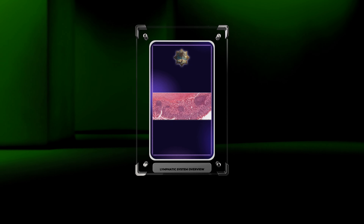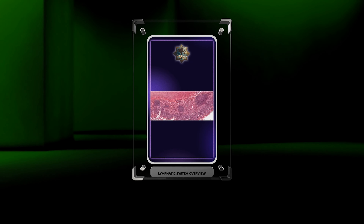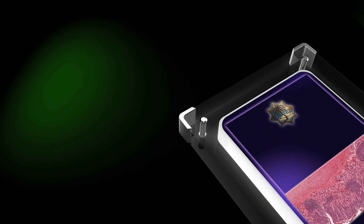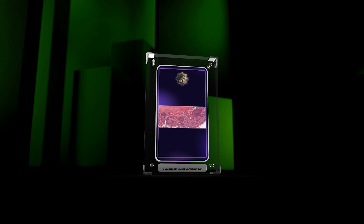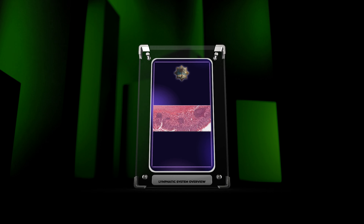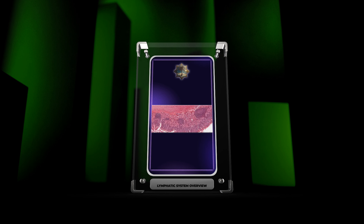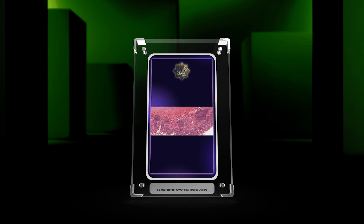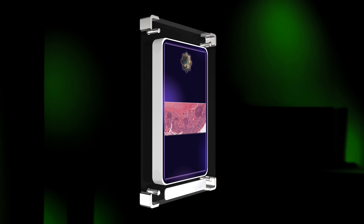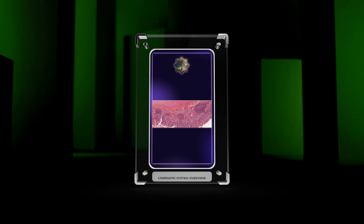The lymphatic system is an essential component of the human body's immune system. It plays a crucial role in maintaining tissue homeostasis, defending against pathogens, and facilitating the transport of nutrients and waste products. In this comprehensive script, we will explore the intricate structure and functions of the lymphatic system, including the lymphatic capillaries, vessels, nodes, and organs.